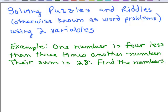We're going to be solving puzzles and riddles, otherwise known as word problems, using two variables. Here's an example: One number is four less than three times another number. Their sum is 28. Find the numbers.